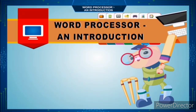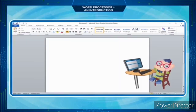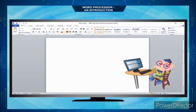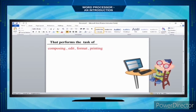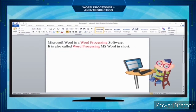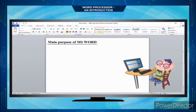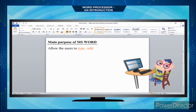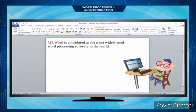Word Processor — Introduction. A word processor is a computer software application that performs the task of composing, editing, formatting, and printing of documents. Microsoft Word is also called MS Word in short. The main purpose of MS Word is to allow users to type, edit, format, save, print, and compose documents. MS Word is considered the most widely used word processing software in the world.